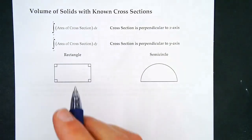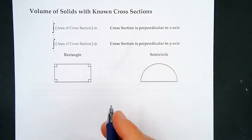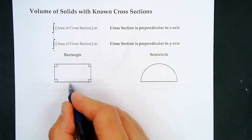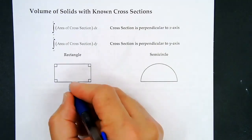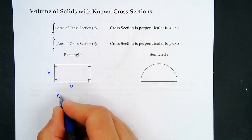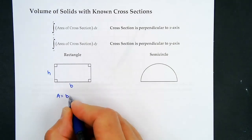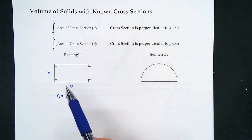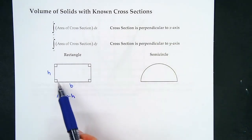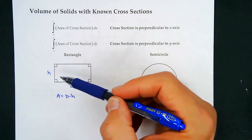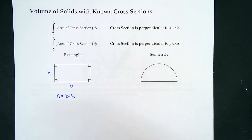Going over a few area formulas for cross-sections. The area of a rectangle is base times height. A lot of times they will tell you the base, which you figure out from the region, and then they'll say the height is twice as big, or five times as big as the base, or something like that.